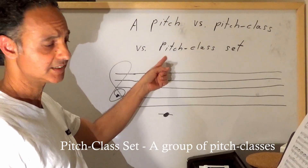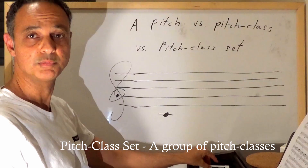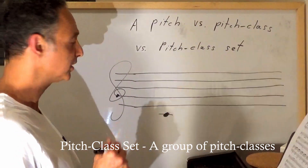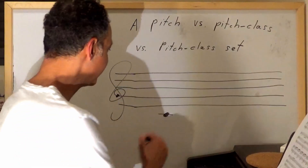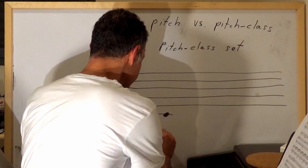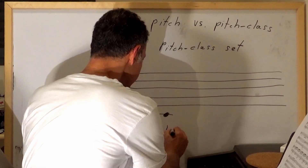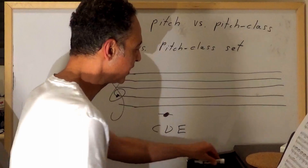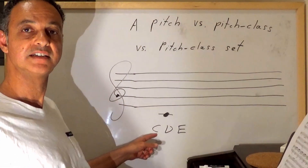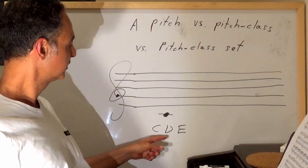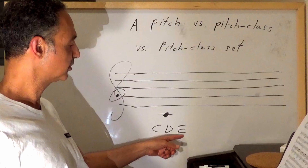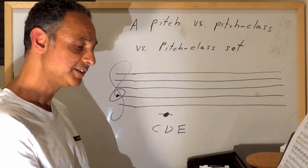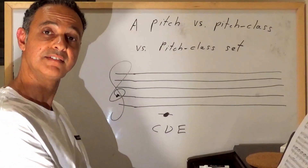When I'm talking about pitch class set, I'm talking about a group of pitch classes. For example, if I have this group of pitch classes: the first one is C, the second one is D, and the third one is E.